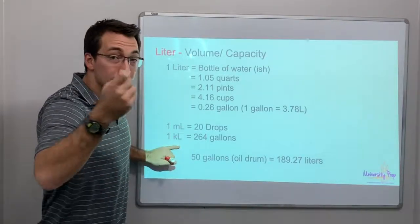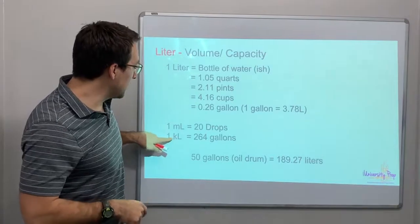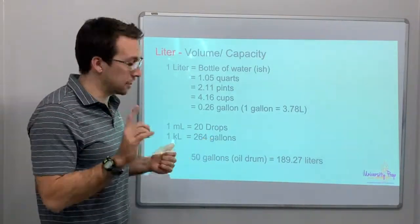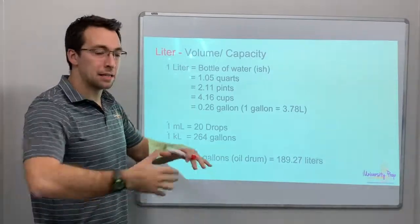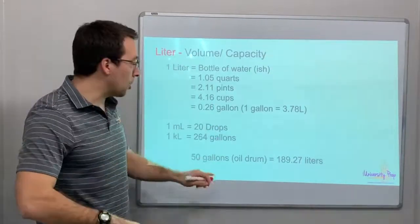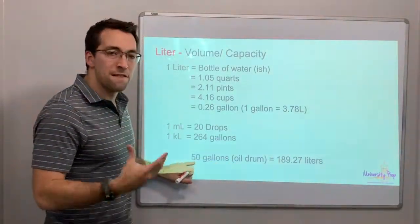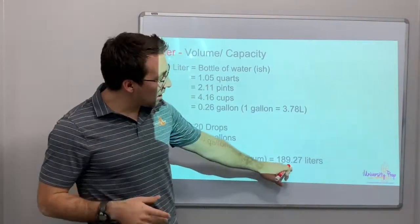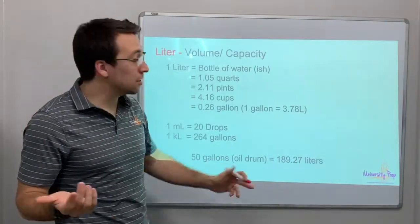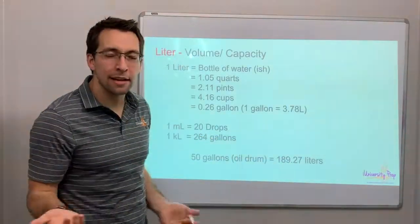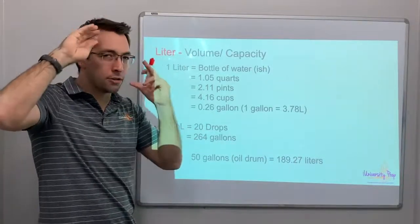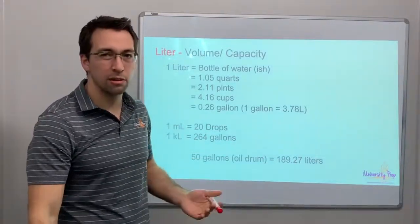In a kiloliter, so 1,000 liters. A kiloliter is 264 gallons. This is cool. We buy as a world economy, oil is sold in 50-gallon drums. Those barrels are 50 gallons. And that is about 200 liters. So 189, 190 liters. Just to try to reference and try to understand what a liter looks like and what it would be.